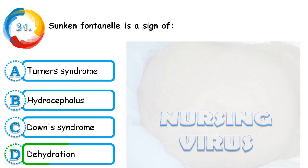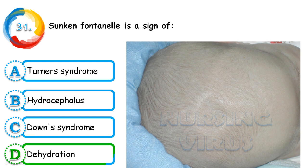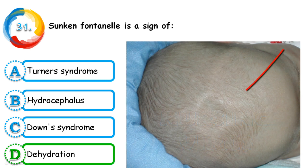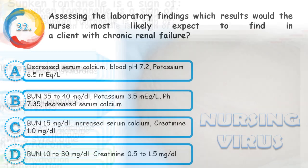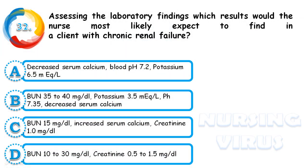Question 31: A sunken fontanelle is a sign of which condition — Turner syndrome, hydrocephalus, Down syndrome, or dehydration? The correct answer is dehydration. When assessing the anterior fontanelle, if it is sunken, that is a major sign of dehydration in a child.